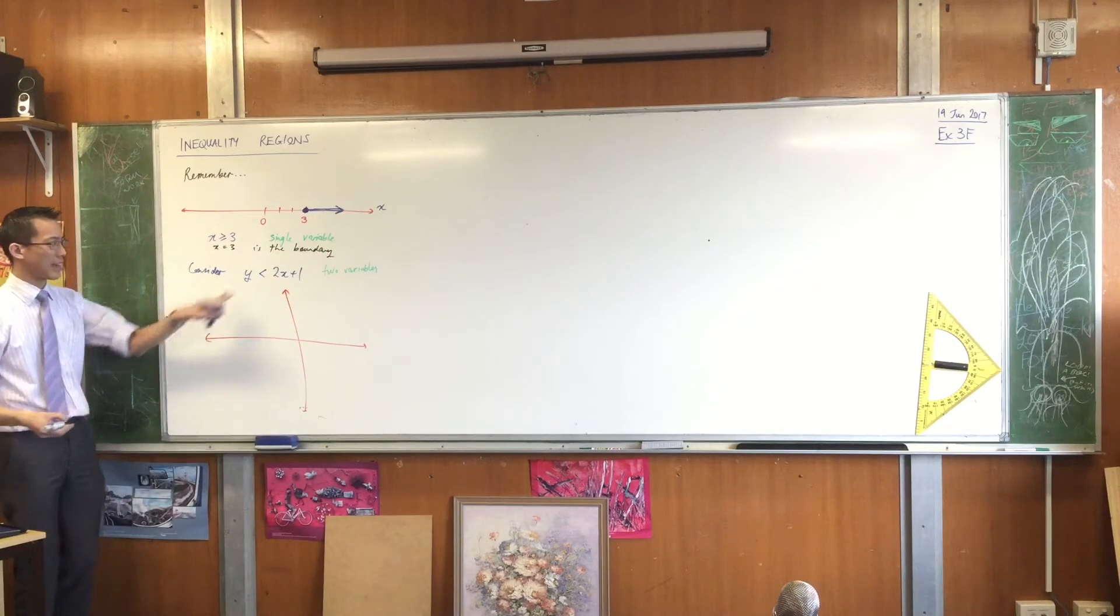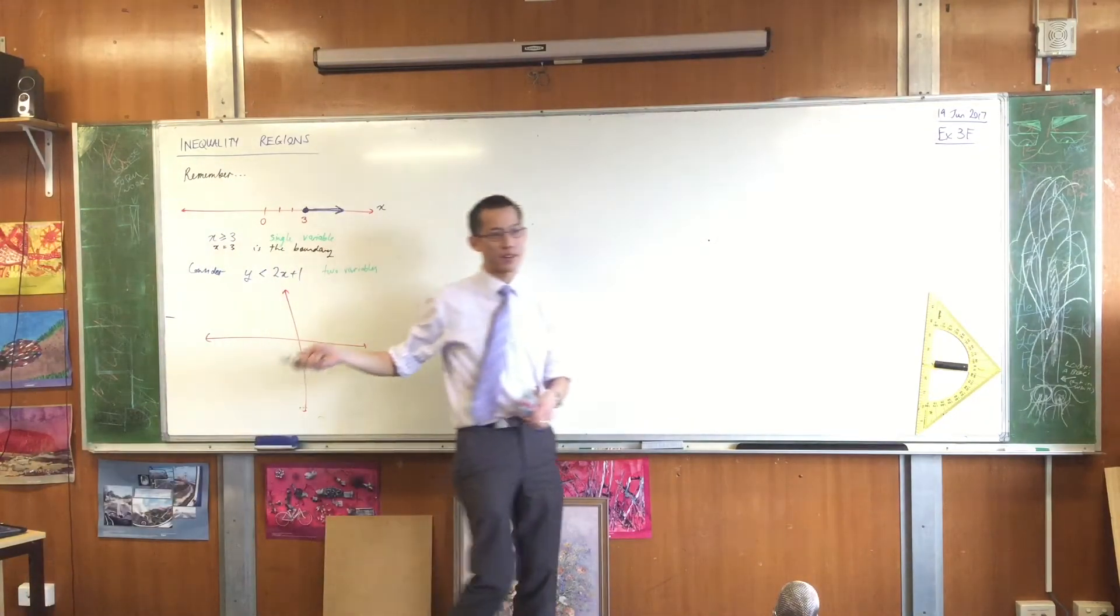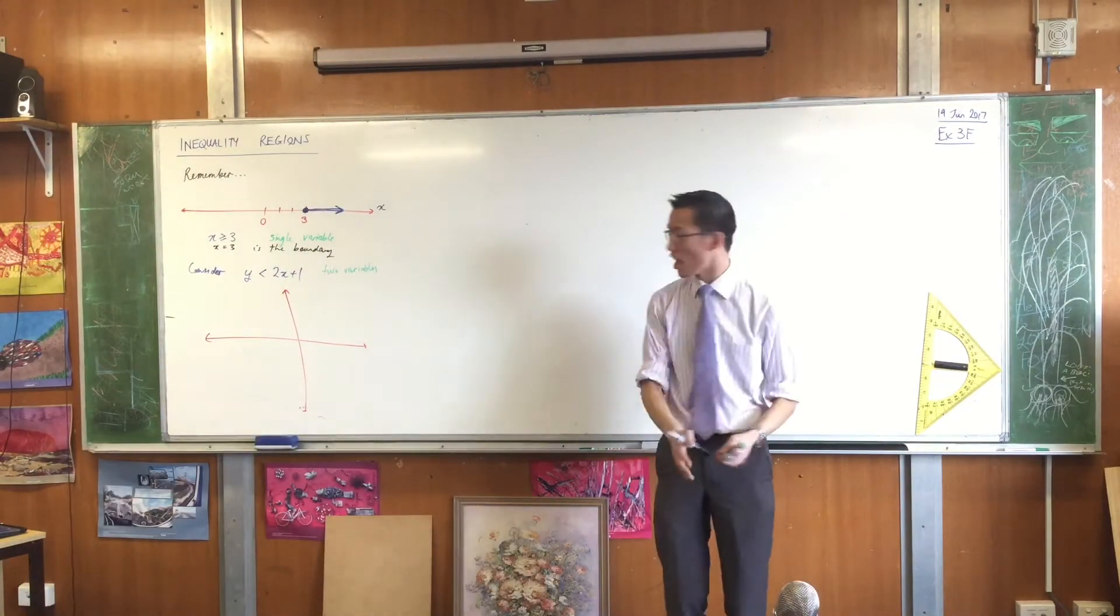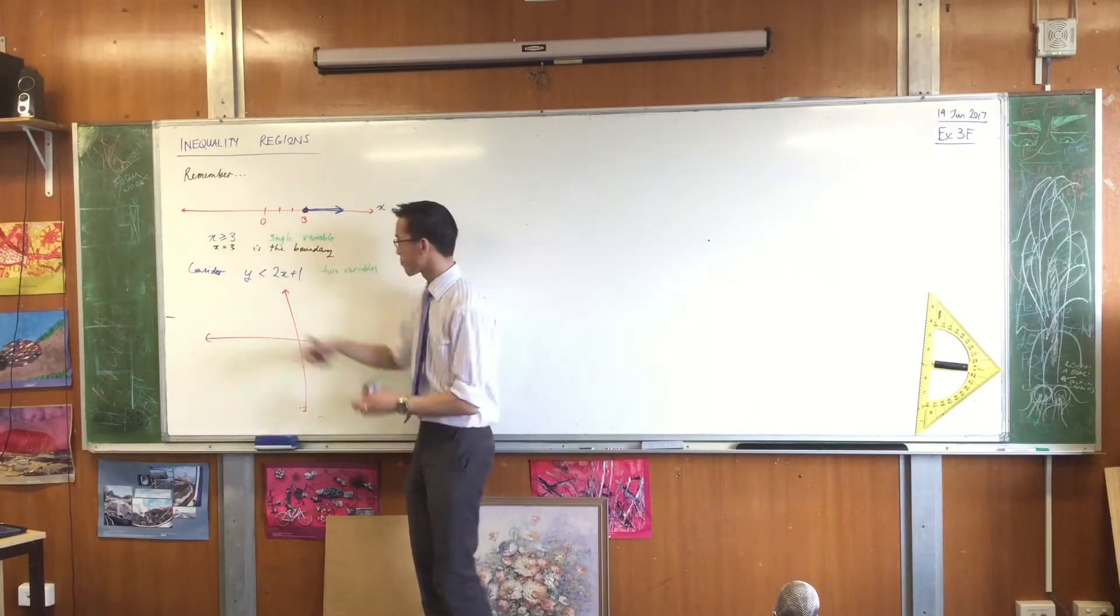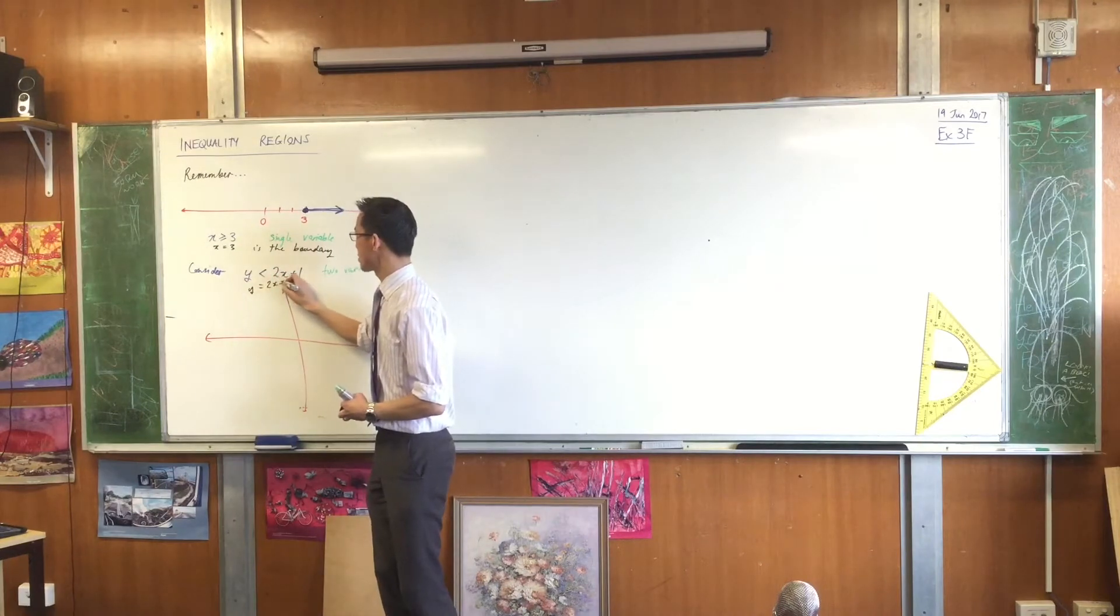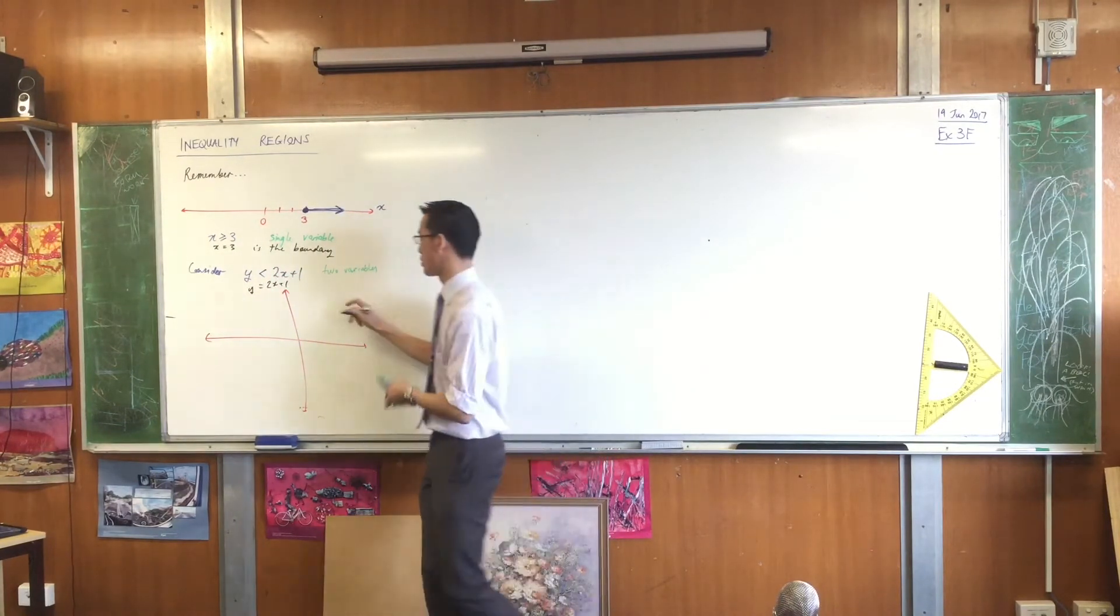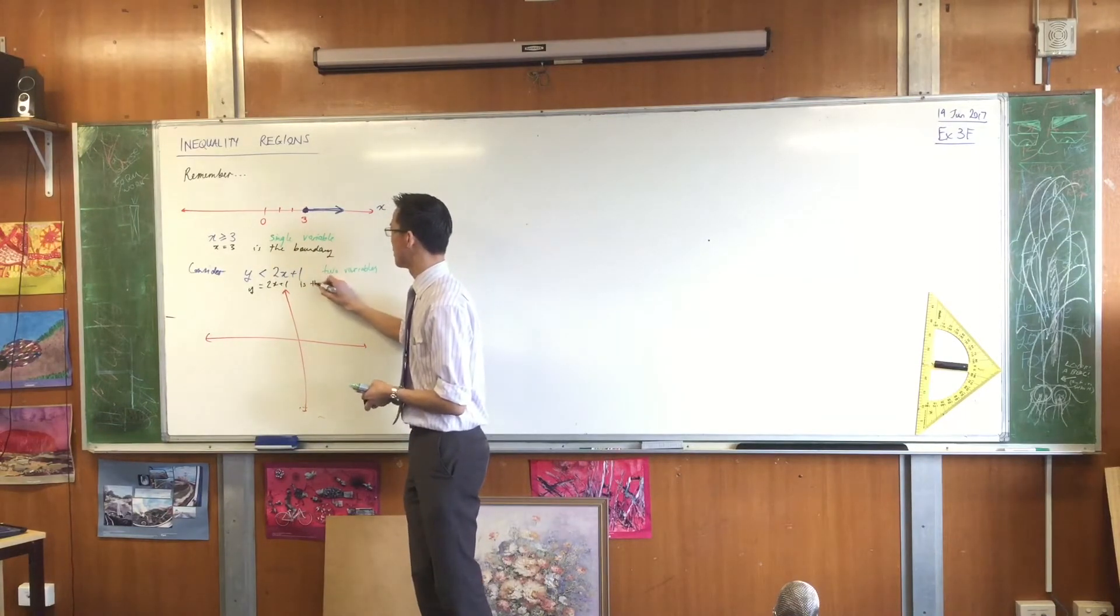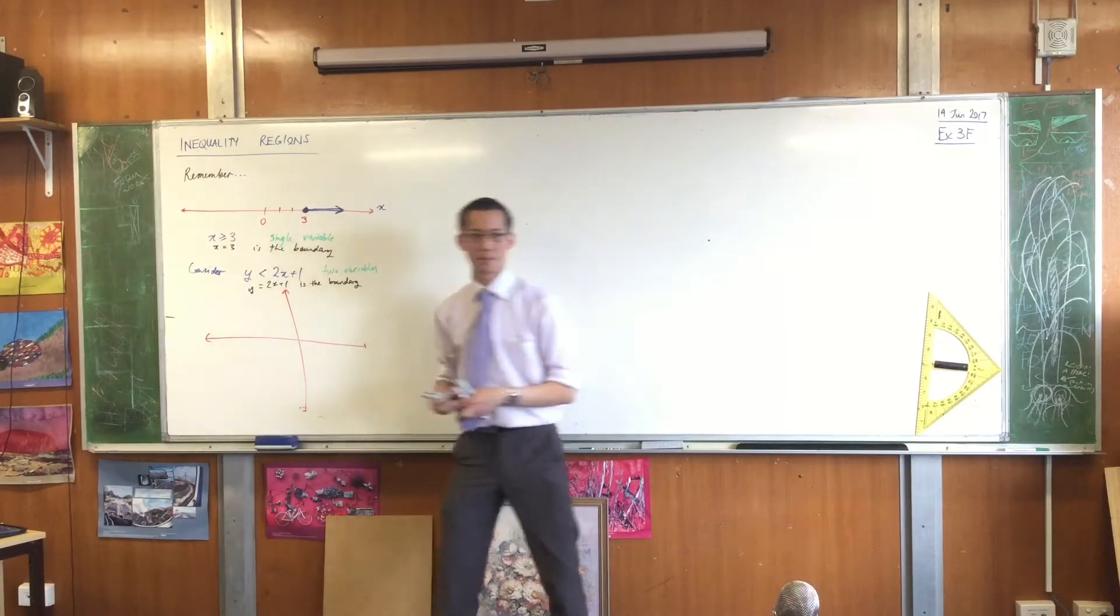So when you have a look at this guy here, I'm looking for all the values of x and y for which this statement is true. And the place where I'm going to start is that just like x equals 3 was the boundary for this, y equals this will be the boundary for my new two-dimensional inequality.